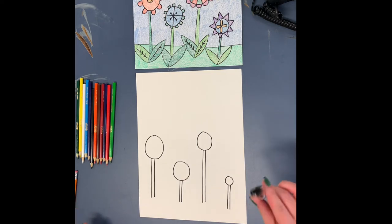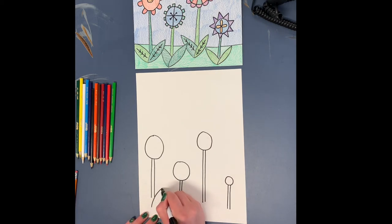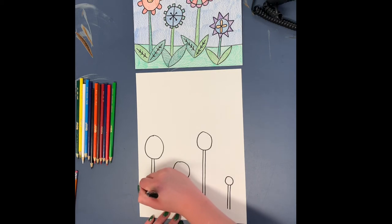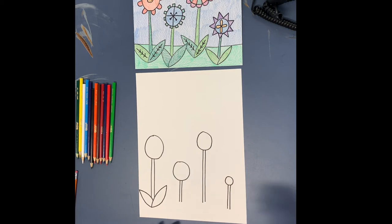Now we want to go on and do leaves. They kind of look like footballs or eyes, so it is a curved line and you do another curved line in the other direction. And this leaf is going a little bit off the paper, but that's okay. And you want to give each flower two leaves.